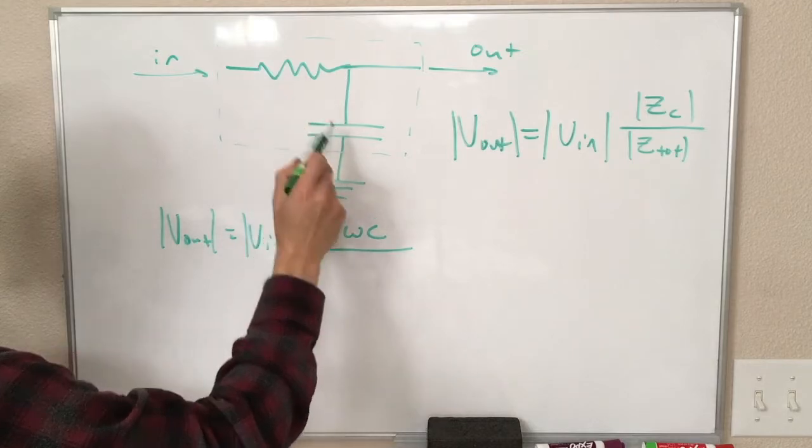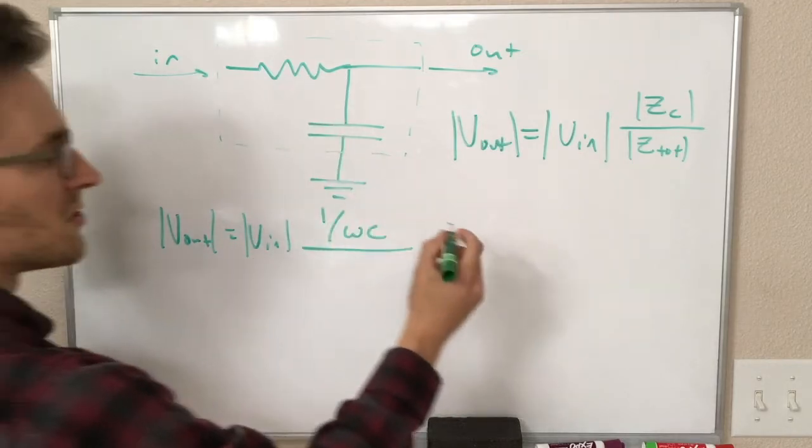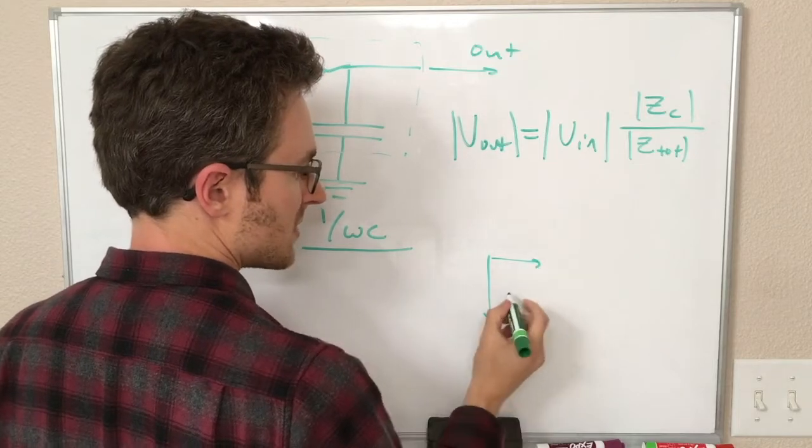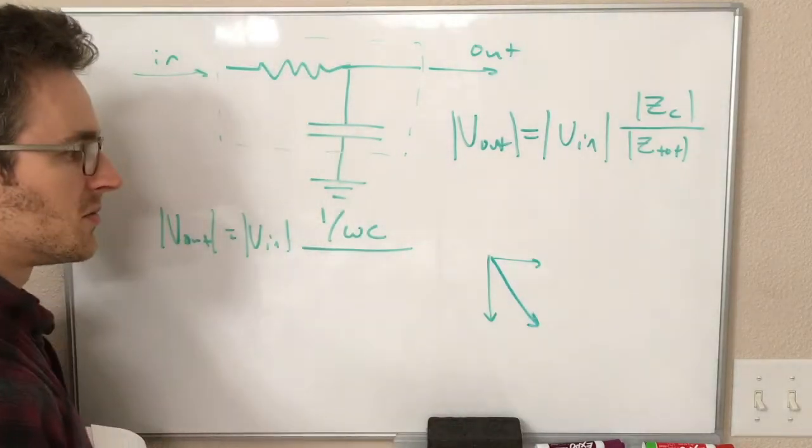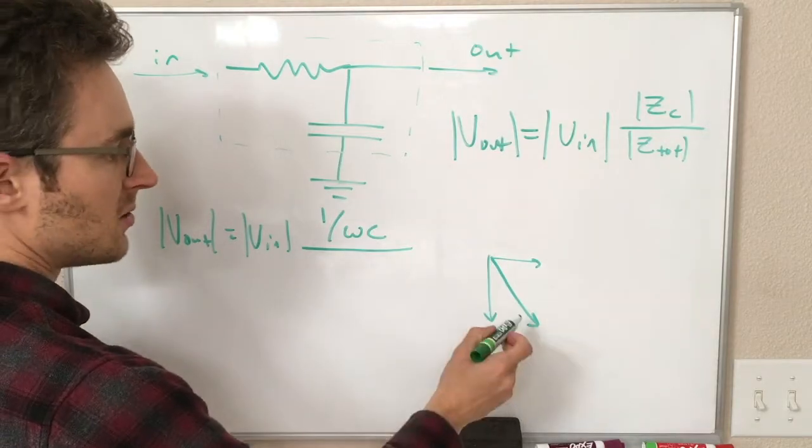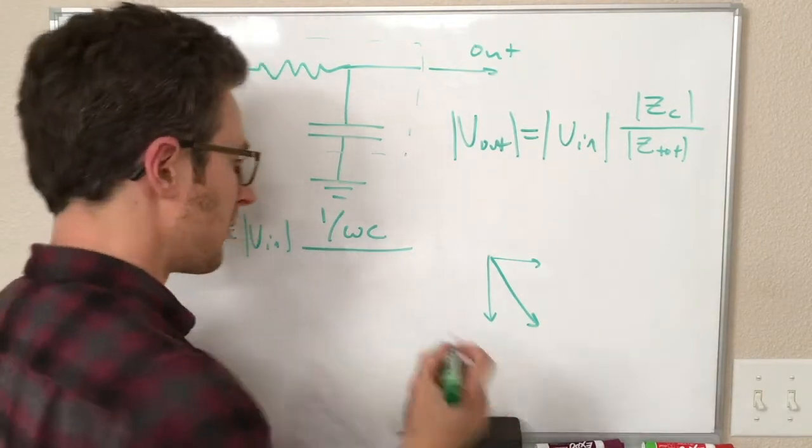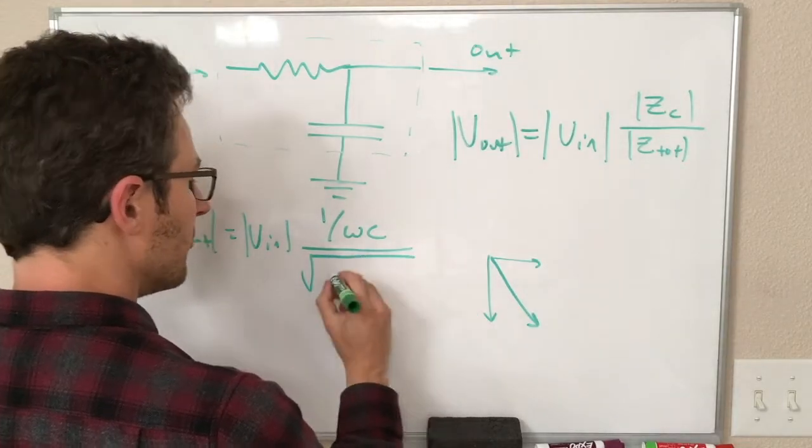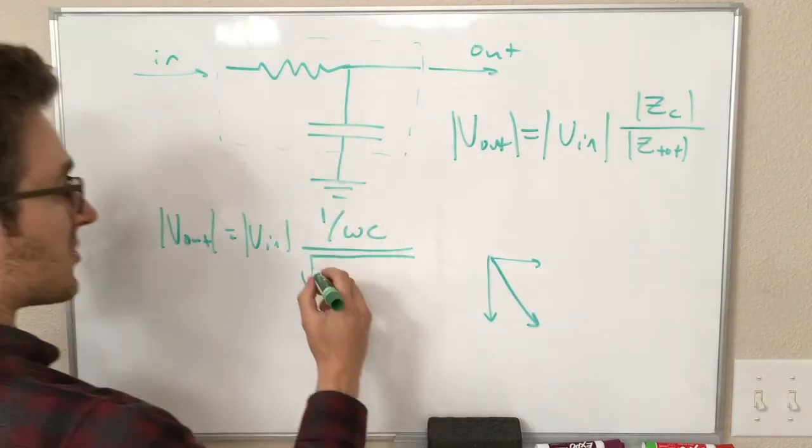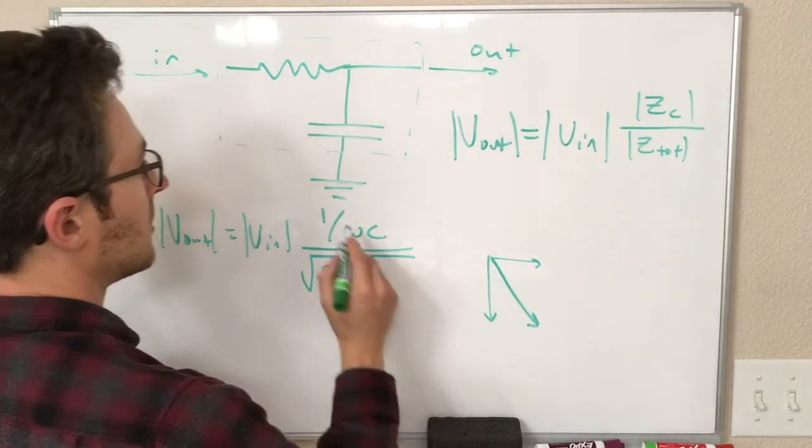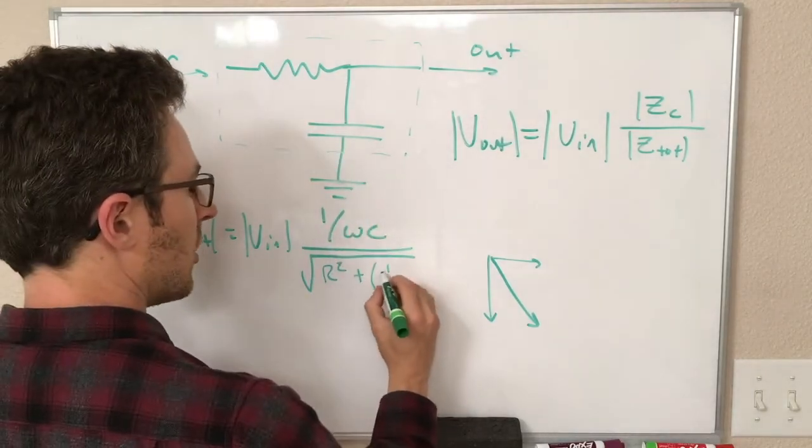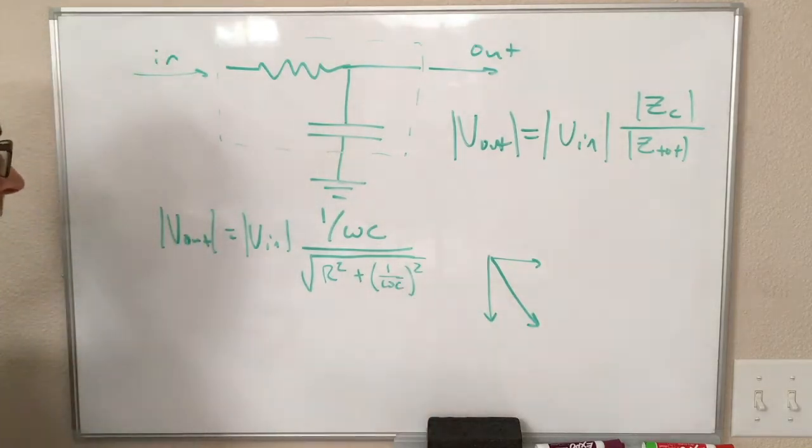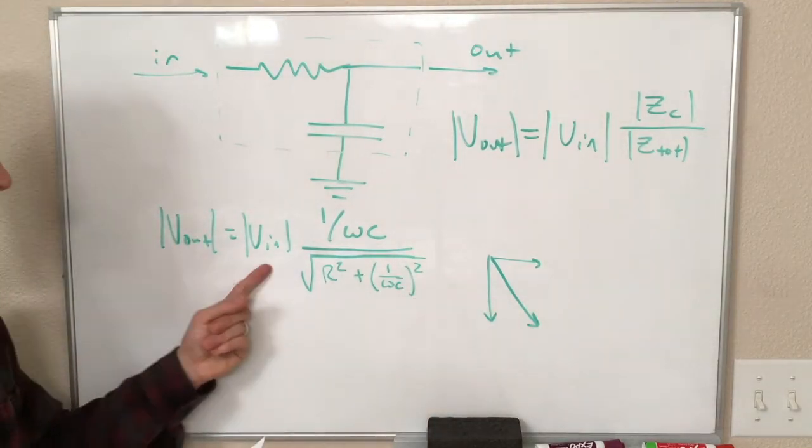Zc over Z total. That is our resistor and our capacitor. These impedances are at right angles, remember? Our capacitor impedance is like this, our resistor impedance is like this. The total impedance is at some angle, and we can figure out the magnitude of this with the Pythagorean theorem. The magnitude of Z total is simply the square root of the resistor impedance, that is R squared, plus the capacitor impedance, which is one over omega C squared. This is an equation for our output in terms of our input.